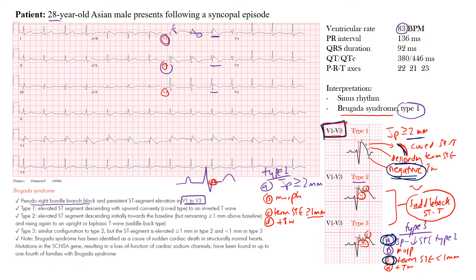Young patients — with an Asian predominance, though it can occur in different ethnicities — present with a brief syncopal episode and are ready to go home. On the EKG you notice this pattern. This is an inherited arrhythmia disorder; the syndrome results from the pattern plus risk of sudden cardiac death. These patients have an absence of overt structural heart disease.